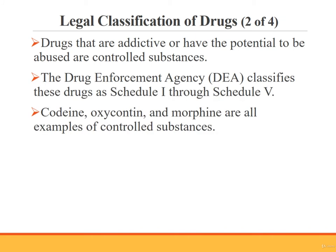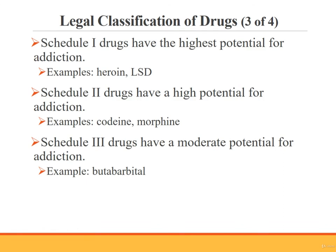Certain drugs are controlled substances if they have the potential for being addictive, habit-forming, or can be abused. The Drug Enforcement Agency, or DEA, enforces control of these drugs, which are classified by their potential for abuse as Schedule 1 through Schedule 5. Schedule 1 drugs have the highest potential for addiction and abuse and are not accepted for medical use — examples include heroin and LSD. Schedule 2 drugs have a high potential for addiction and abuse but are accepted for medical use; examples include codeine, morphine, cocaine, opium, and secobarbital.